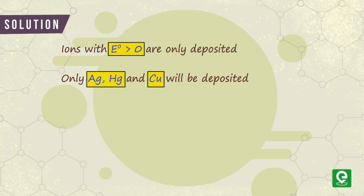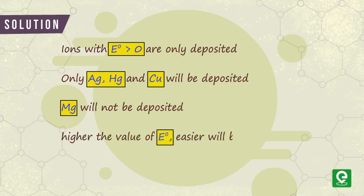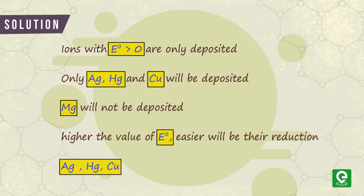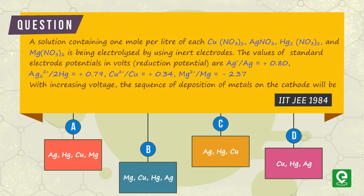Also, we know that higher the value of E°, easier will be their reduction. Therefore, the sequence in which ions will be deposited on increasing voltage across the electrodes is Ag, Hg, Cu. Hence, option C is the correct answer.